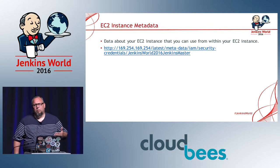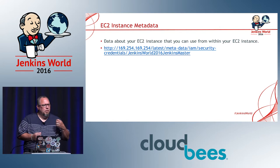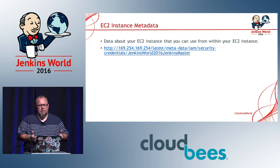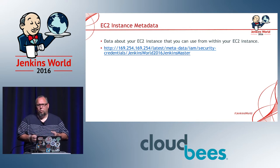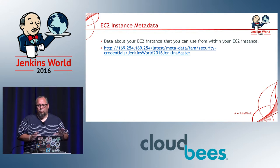If you do use roles, every EC2 has a set of metadata you can access via a curl call. When the EC2 instance is provisioned, you can make a call out to get the credentials for that role — these are temporary credentials. You can reach out, get those credentials, and then use them later in a Jenkins call. But roles are a little dangerous, so be careful if you're going to use them.